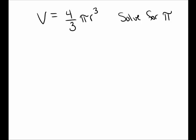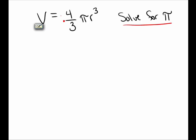In the next problem, we have the volume of a sphere. The volume of a sphere is 4 thirds pi r cubed. We've been asked to solve for pi. To solve for pi means I want to have pi equals and everything else on the other side. I'll first clear fractions by multiplying both sides by 3 over 4. This clears away the fraction on the right, leaving pi r cubed.